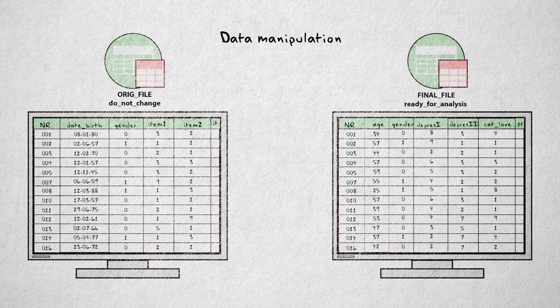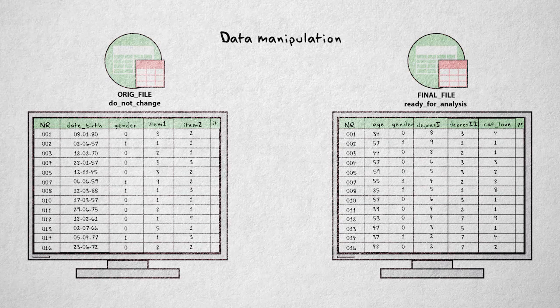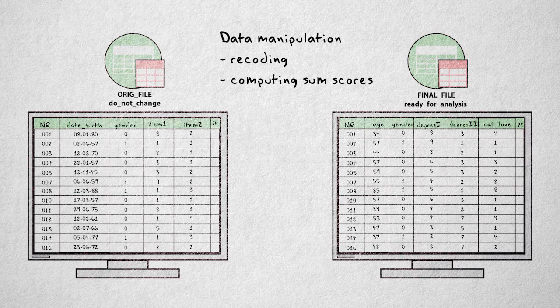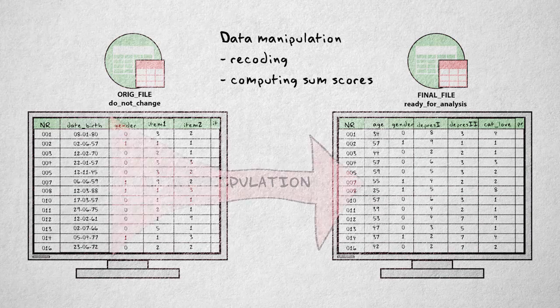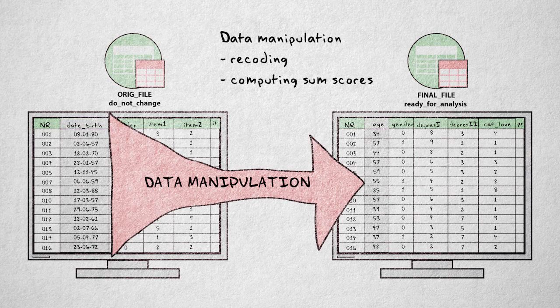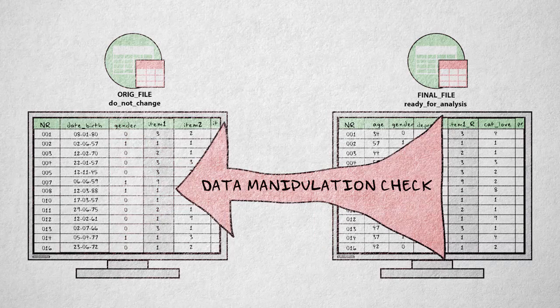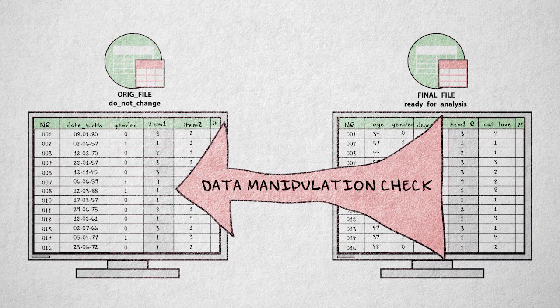Data manipulation refers to computations, such as recoding and computing aggregate scores, like a sum score of depression. Another example is calculating age from date of birth. Without the original data file, we cannot check whether we made any errors in manipulating the data.